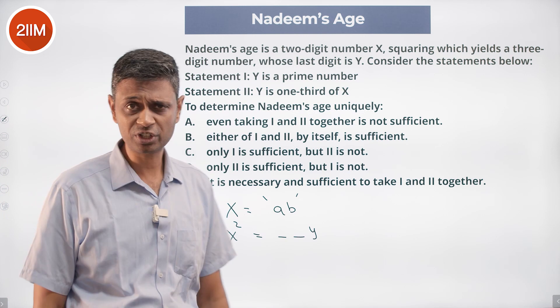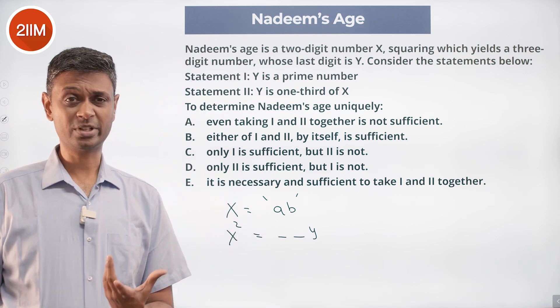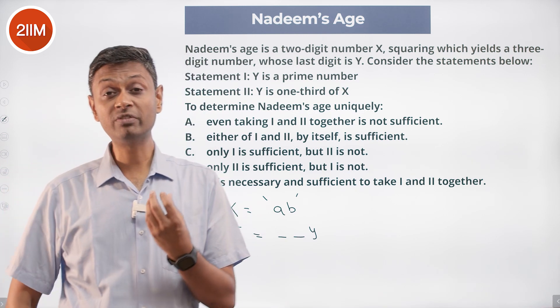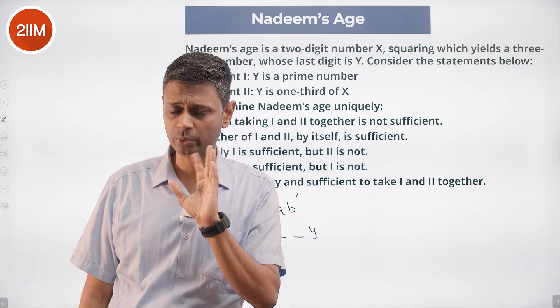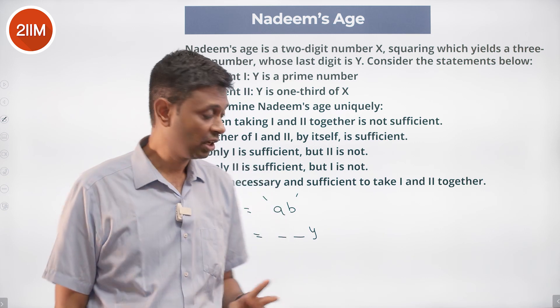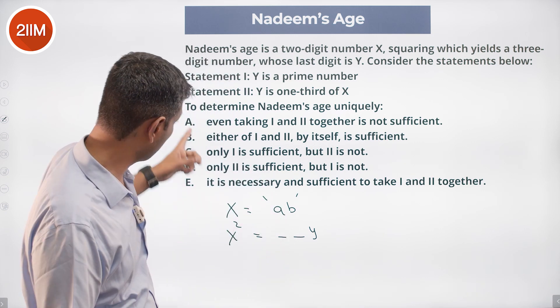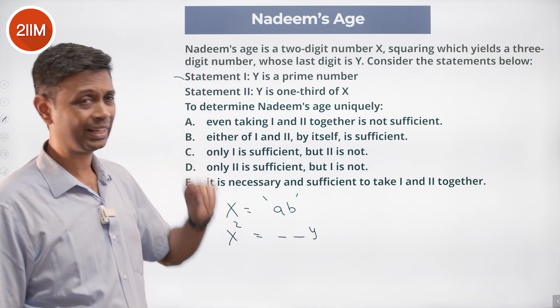This is a data sufficiency question — how much of the information we have is enough to answer the question? Absolutely beautiful question. I want to look at the first statement and find out whether I can determine the answer from it.